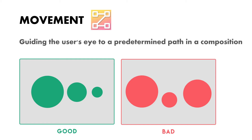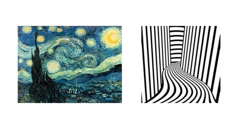Next is movement. Movement is about guiding the user's eye along a predetermined path in a composition. In a good composition, your eyes move naturally through it following a hierarchy. In a bad example, the eye stops abruptly because of a sudden change in the size of circles, preventing fluid movement. You see the whole picture but your eyes don't move through it naturally.